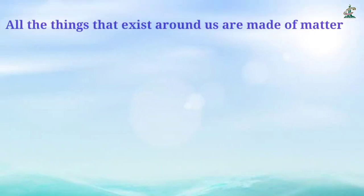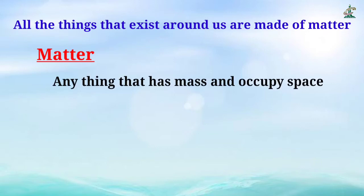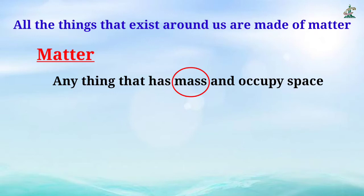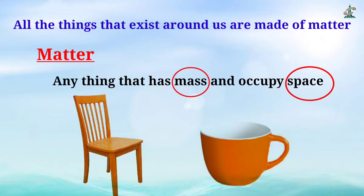Students, all the living and non-living things that exist around us are made up of matter. تمام چیزیں کس سے بنی ہوئی ہیں؟ Matter سے بنی ہوئی ہیں۔ What is matter? Matter is anything that has mass and occupies space. For example, chair and cup — آپ دونوں چیزوں کو دیکھ سکتے ہیں۔ دونوں کے پاس mass بھی ہے اور وہ ایک جگہ کو بھی occupy کرتے ہیں، مطلب وزن بھی ہے اور جگہ بھی گھیرتے ہیں۔